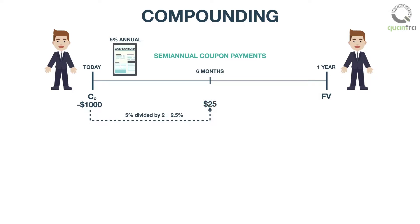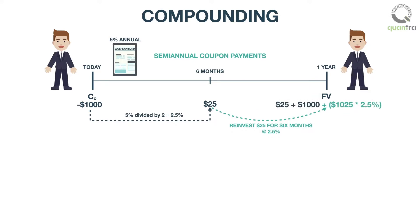For compounding effects, you would require reinvesting these $25 for the next six months. At the end of the second half-yearly period, you would earn an interest of $1,025 multiplied by 2.5%, that is, $25.625, giving you an overall future value of $1,025 plus $25.625, that is, $1,050.625.